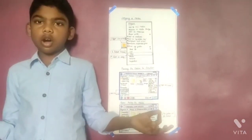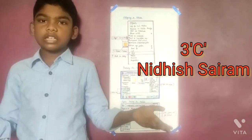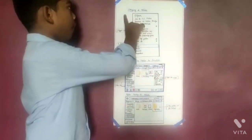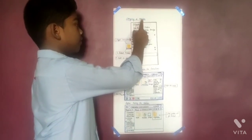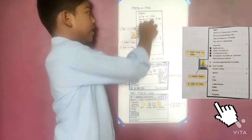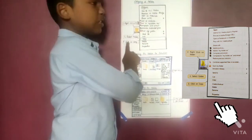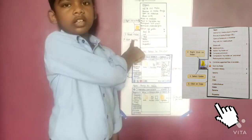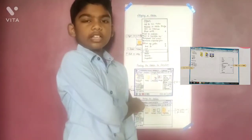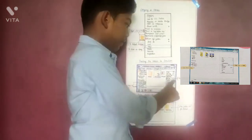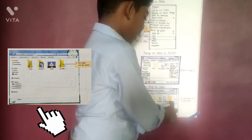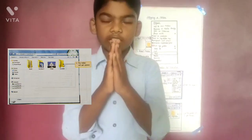Good morning to all. I am Saranam, studying in 3rd standard C section in Cardinal Public School. Today I am going to explain how to copy and paste a file or folder. To copy, first select the file or folder to be copied, then right click the mouse button and a list of options will appear. Click the Copy option. To paste, select the location where the file is to be copied, then right click and click the Paste option. The file or folder will be copied to the new location.